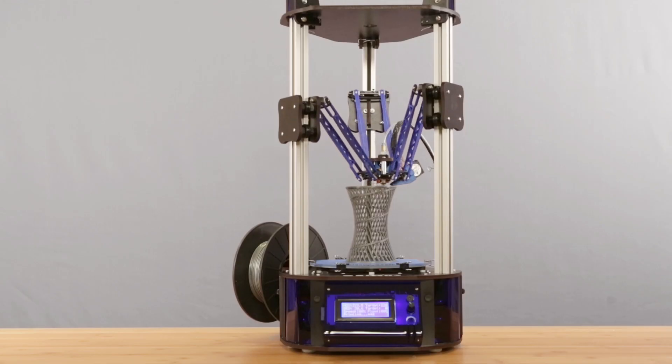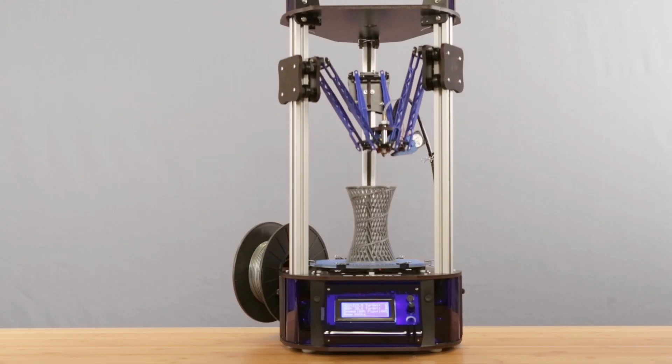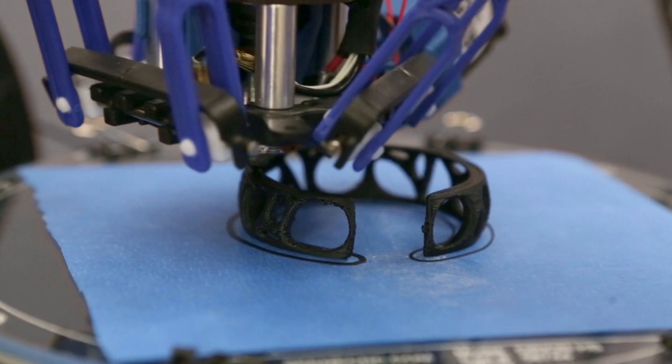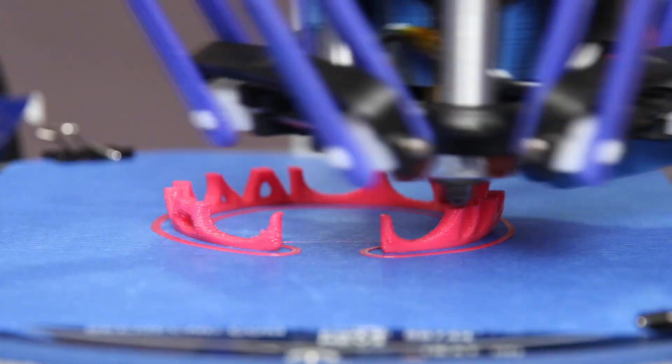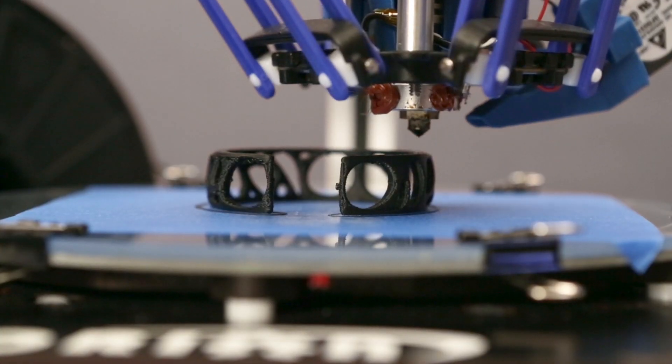Parts under 100 millimeters are gonna print pretty well. You can print really detailed parts at 100 microns with fast speeds and printing fine details like on these bracelets really show how you can print high quality features at fast speeds.